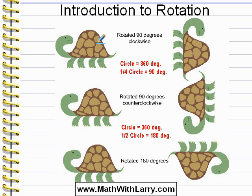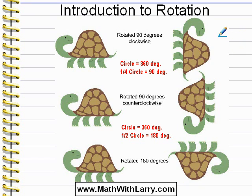Let's take a look. Here I have a drawing of a turtle, and you can see on the right here I've rotated the drawing 90 degrees. Take a look at that and make sure that you see that I've rotated it one fourth of a full circle. In particular, I rotated it in a clockwise direction, just the way the hands of a clock move. So we can say that this is a 90 degree clockwise rotation.